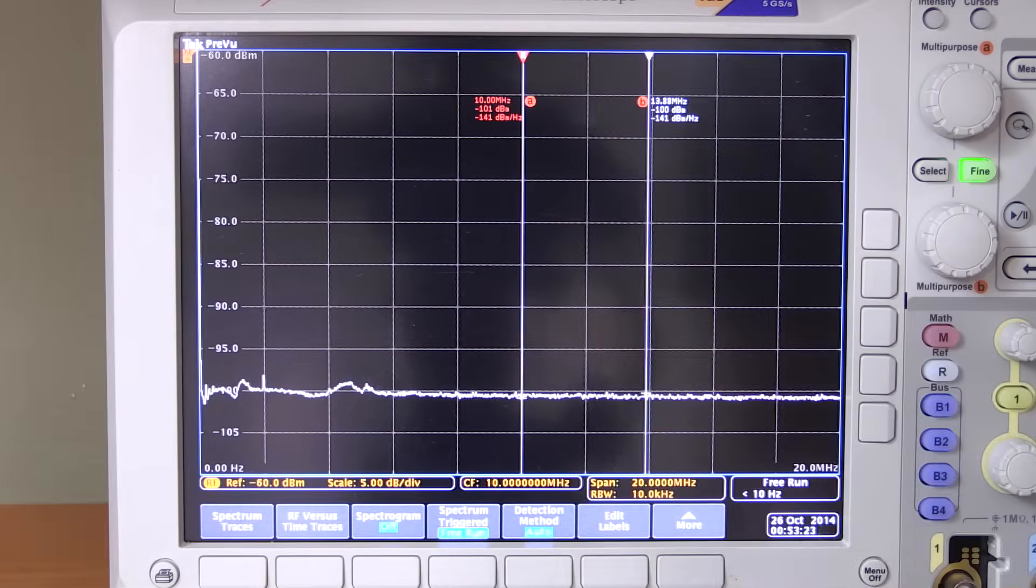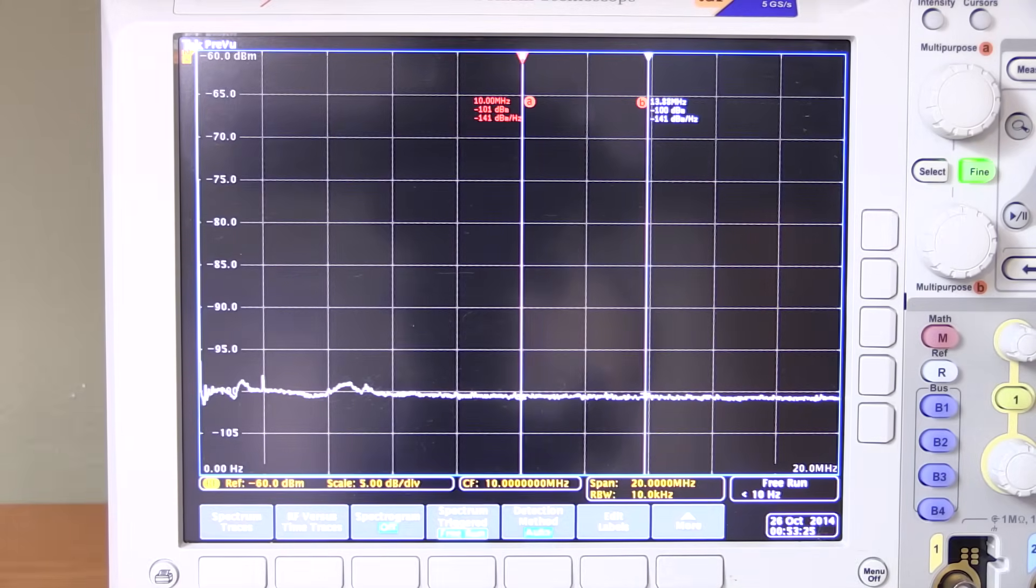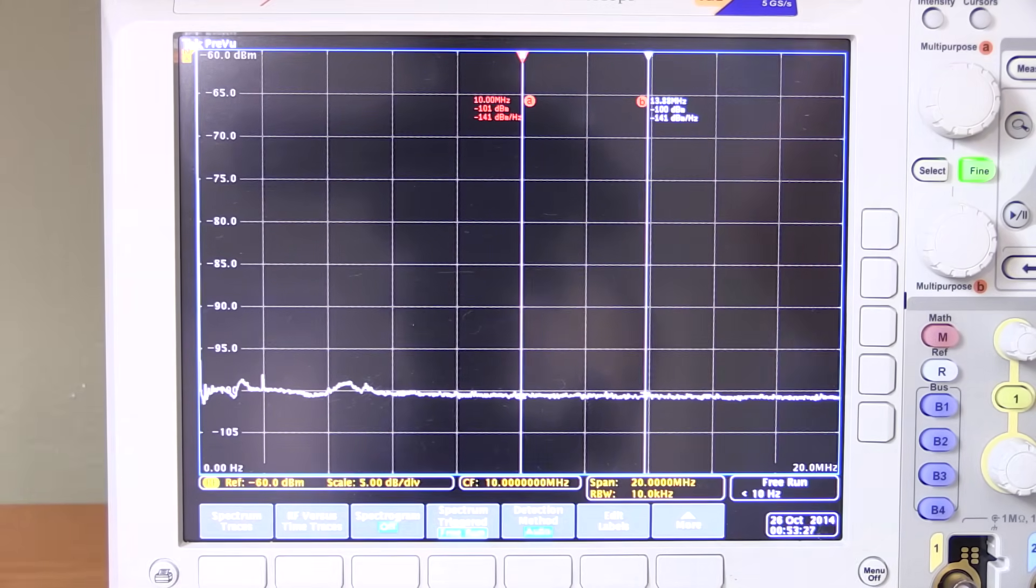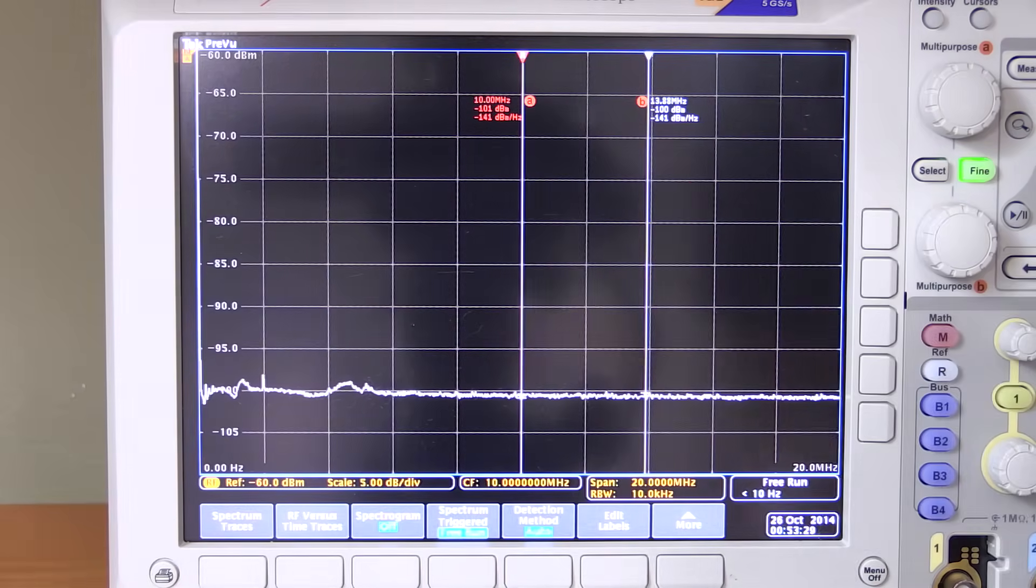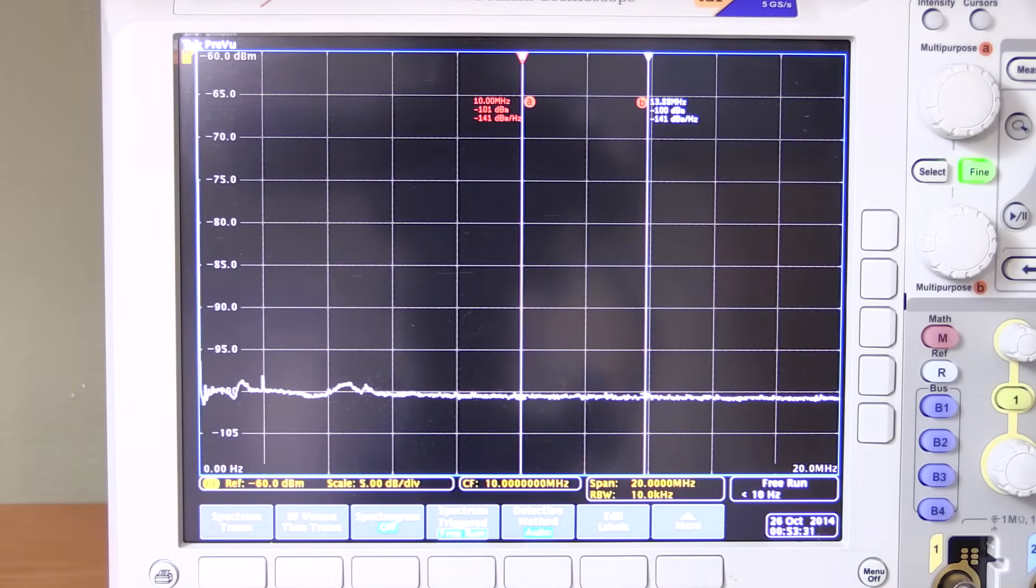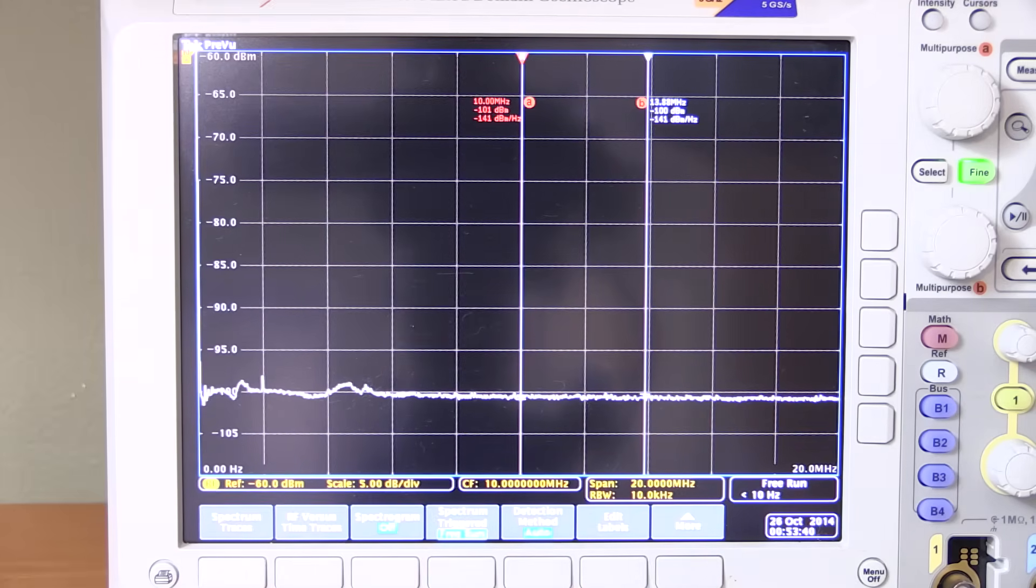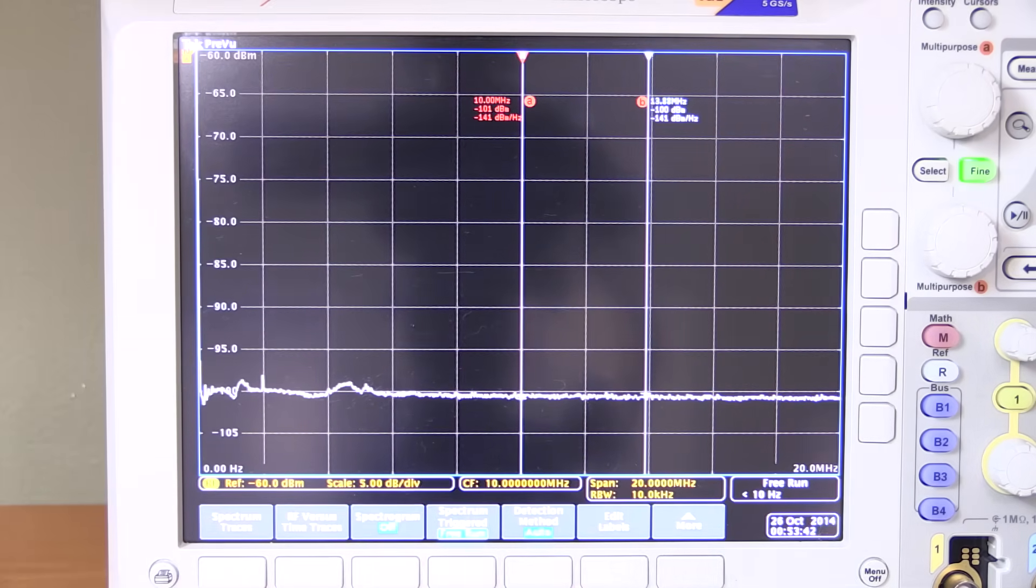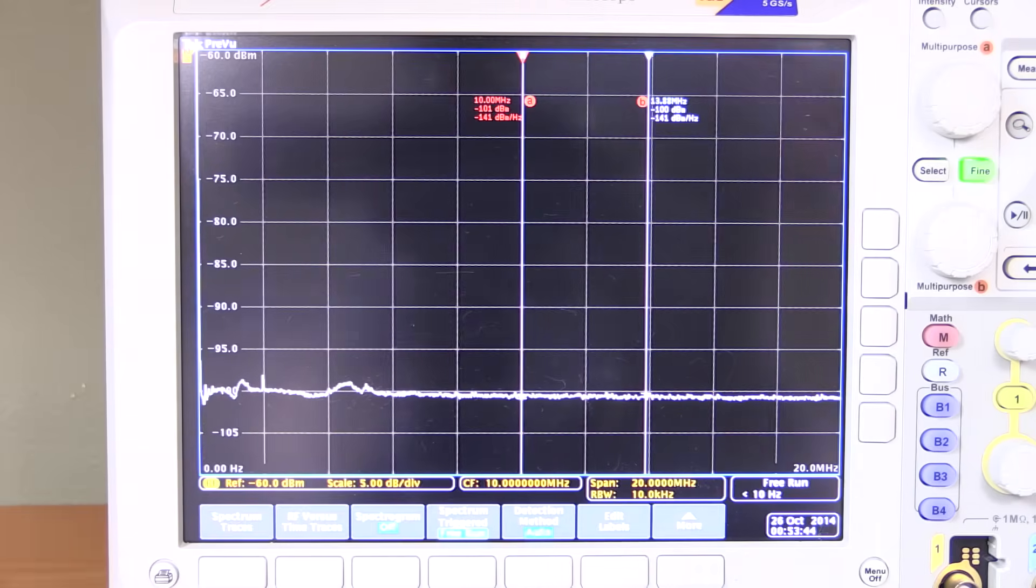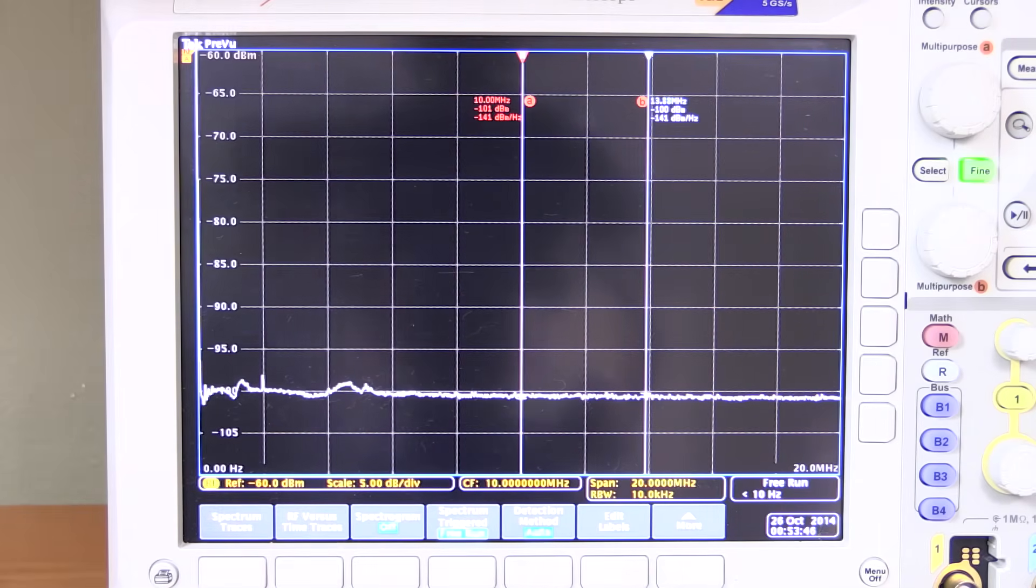We have the negative 101 dBm that we will do the math with for the 10 kilohertz resolution bandwidth. And then we have the negative 141 dBm per hertz spectral density. And it's really nice that it shows that. And that way we have two values to work with. And we will calculate both. And in an ideal world, the noise figure calculated for both will be exactly the same.